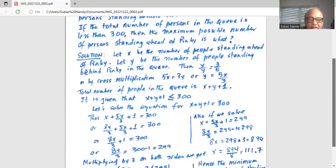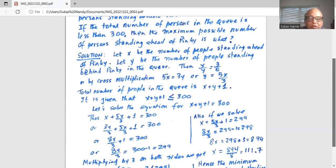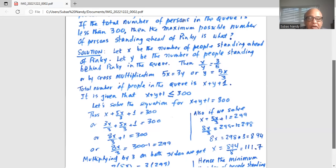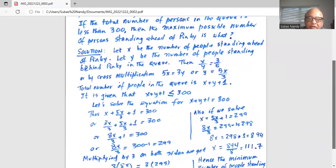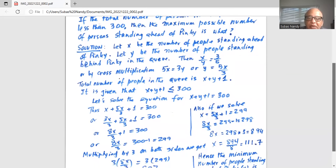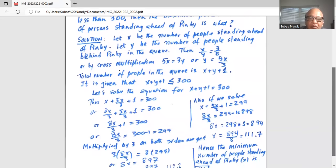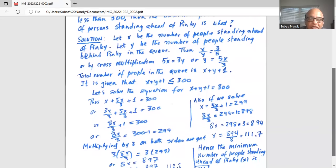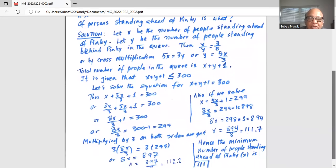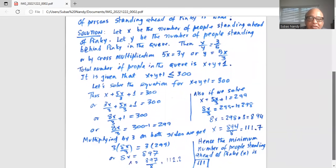We can write 3x divided by 3 plus 5x divided by 3 plus 1 equal to 300 or 8x divided by 3 plus 1 equal to 300. Now subtract 1 from both sides you get 8x divided by 3 equal to 299. Now multiply by 3 on both sides to get 8x equal to 897. Divide by 8 on both sides to get x equal to 112.2.